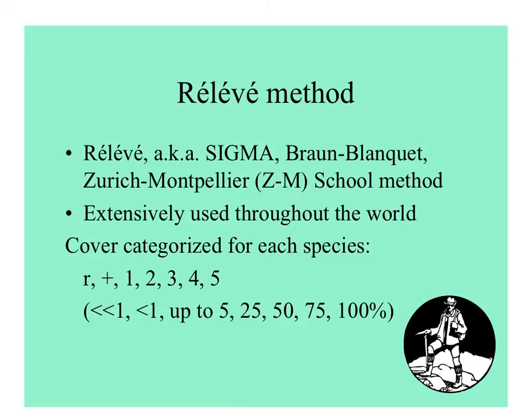The relevé method is sometimes called the Braun-Blanquet method, or even 'brown blanket' as some people call it. Sometimes it's called sigma. It all came from the Zurich-Montpellier school method in Europe and has been used extensively throughout the world.